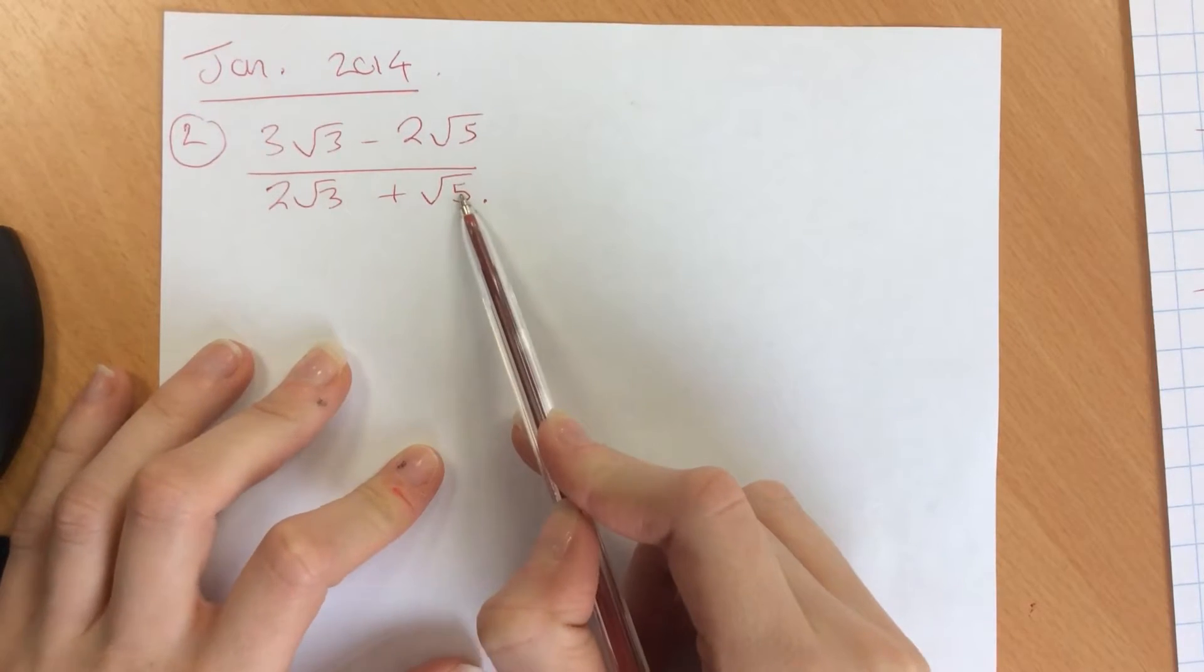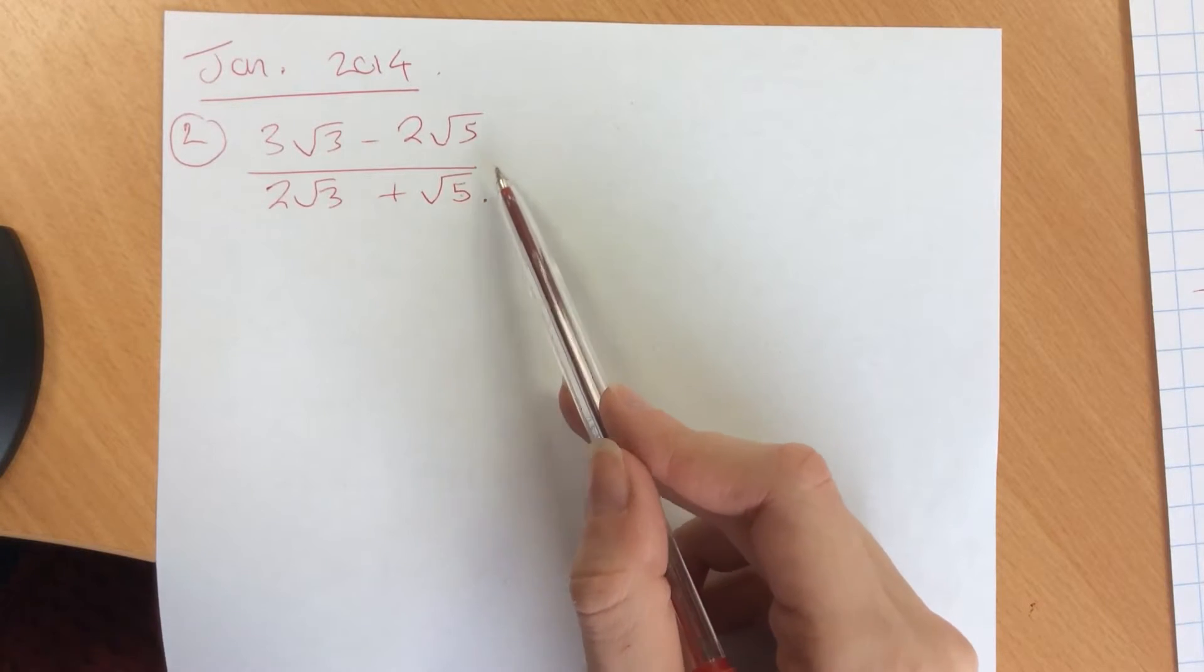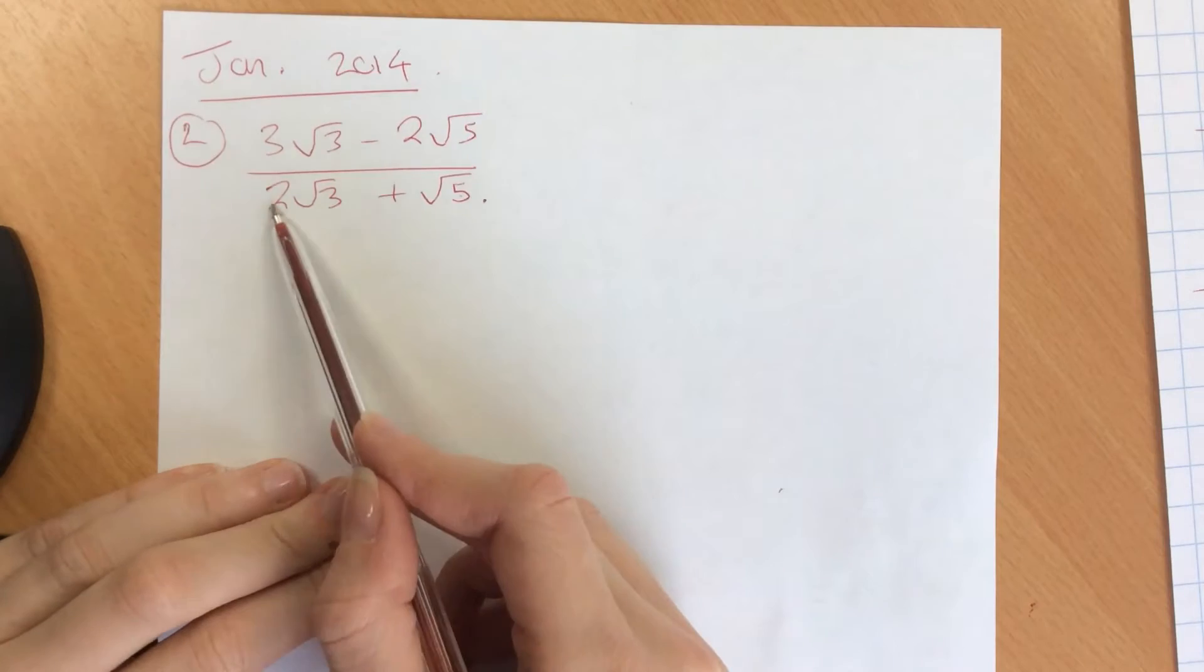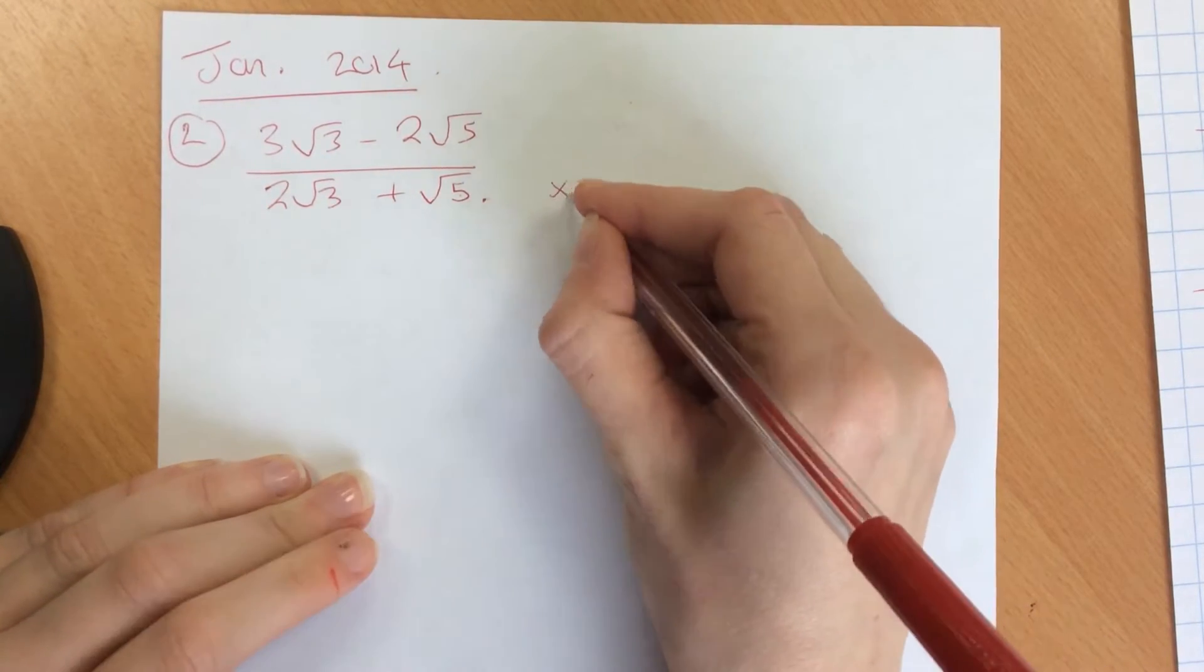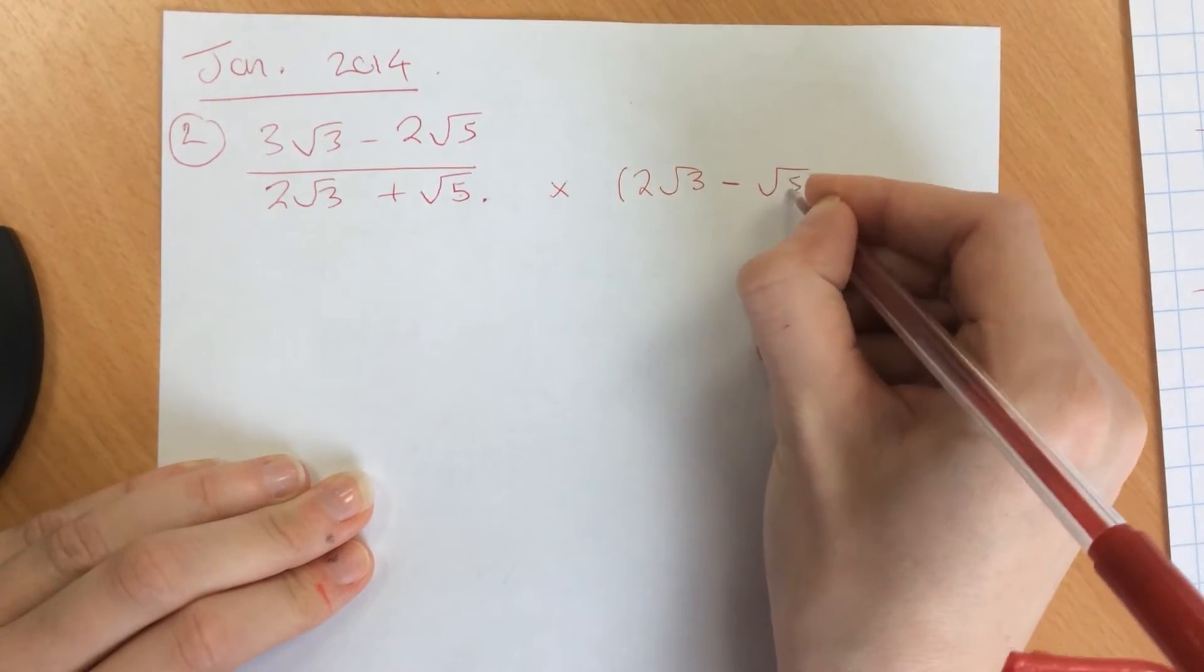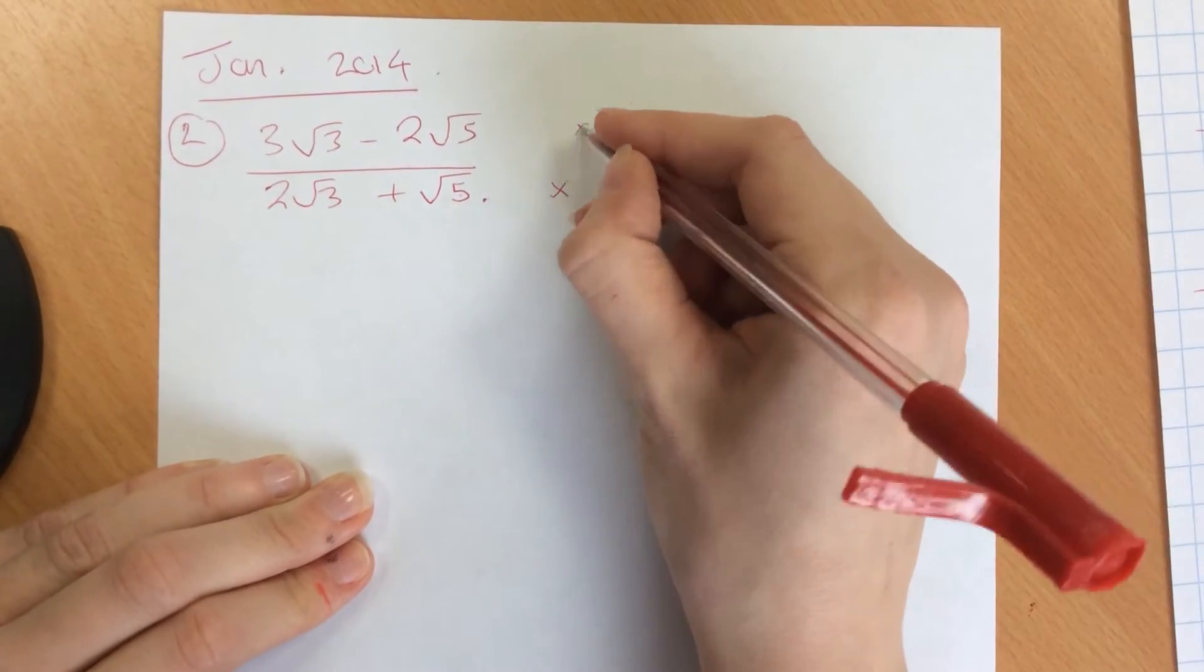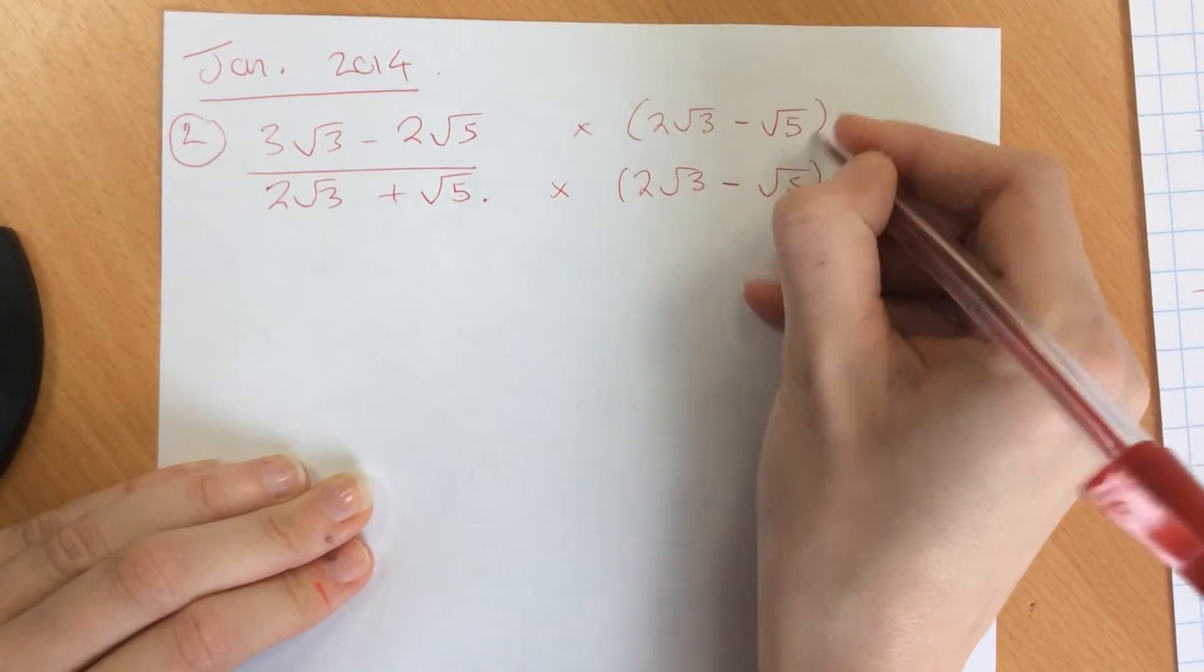So we have surds on the top and the bottom and you're going to rationalize the bottom. So the first thing you should do on this is times the top and the bottom by what's on bottom but changing the sign in the middle. So changing it by 2 root 3 minus root 5 and doing the same to the top, so 2 root 3 minus root 5 there.